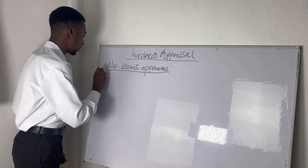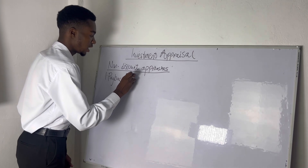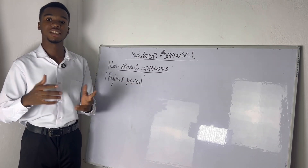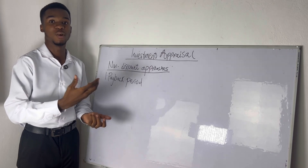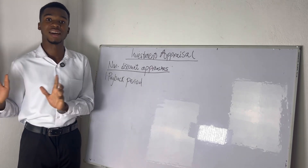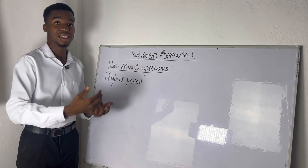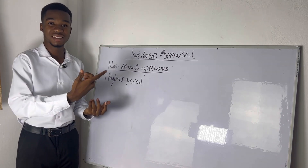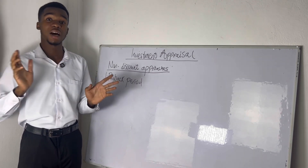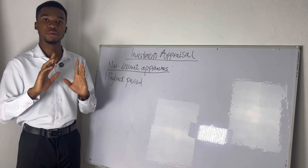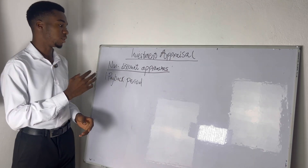The first non-discount approach is the payback period, and it's the easiest among them. The payback period is all about how fast you are going to get your money back. For example, if deciding between buying land or a car, and the land will return your 50,000 CDs in two years while the car takes four or five years, you choose the land. The payback approach only looks at how fast you recover your investment — nothing else.